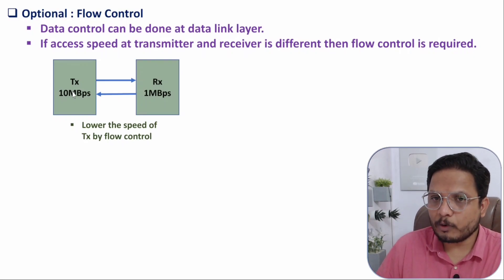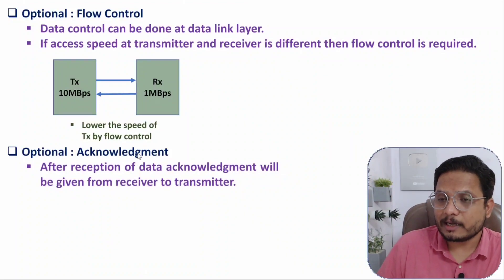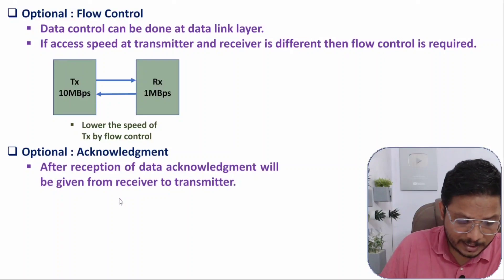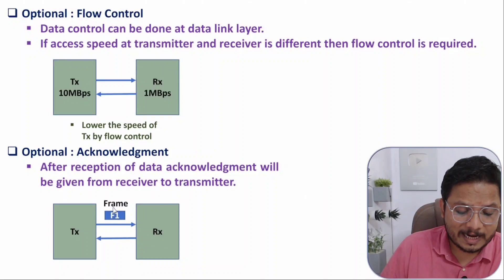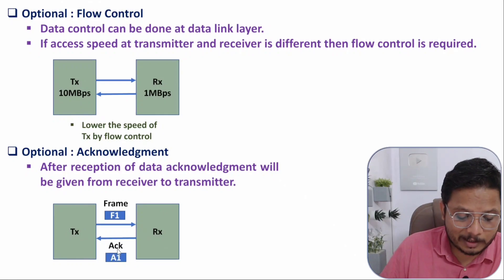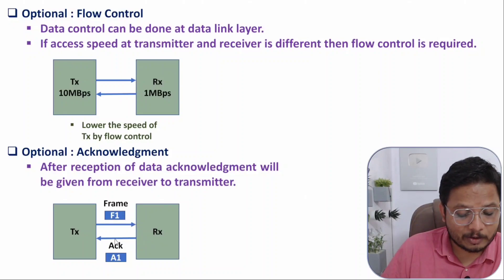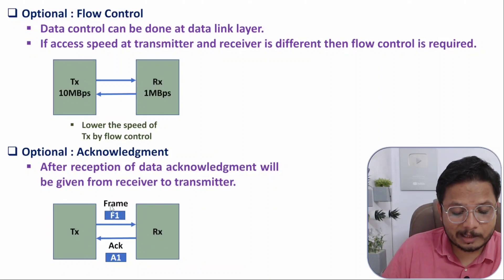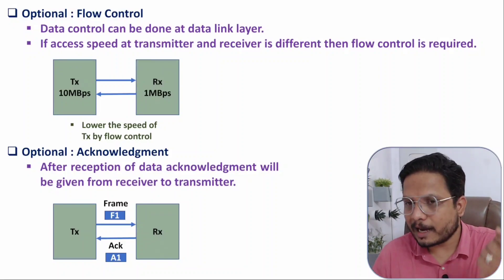Another optional task is acknowledgement, also managed at the Data Link Layer. When the transmitter sends a frame to the receiver, once the frame is received, the receiver gives feedback to the transmitter as an acknowledgement, confirming the frame was received properly. If the frame is not received properly, the receiver sends an acknowledgement asking for the frame to be sent again, because the frame was lost somewhere in the medium.